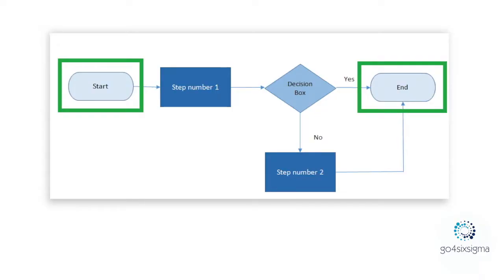What is very important is that the starting point on your SIPOC and the starting point on your process map should be the same, and the ending point on your SIPOC and ending point on your process map should be the same as well. Because we need to be very consistent between what is on the project charter, what is the process, what is on SIPOC, and later what is on the process map. It should be the same process and the same starting and ending point.